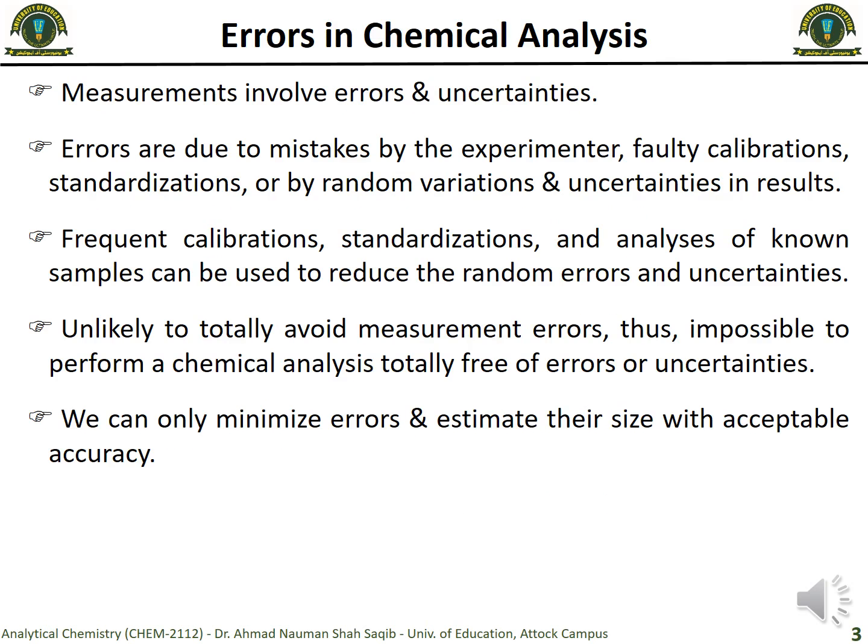When we talk about chemical analysis and the measurements we perform on different instruments, the problem is that when you perform some test or want to test some characteristic and you use some instrument and get some data - definitely you can process it using different tools and get information. But the question is: is what you have done accurate or not? Is the information you are getting accurate or not? That's what we call measurements involving errors and uncertainties - you are not sure whether it is really accurate or not. There can be many reasons which result in errors during experiments or analysis.